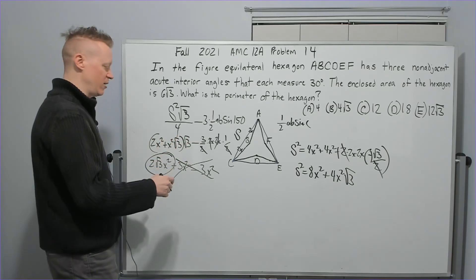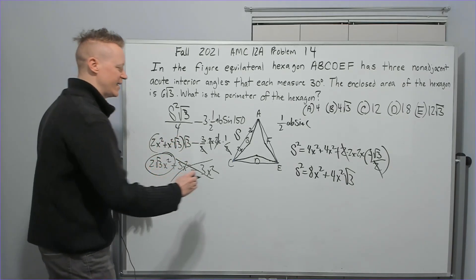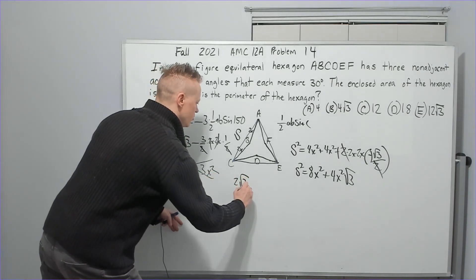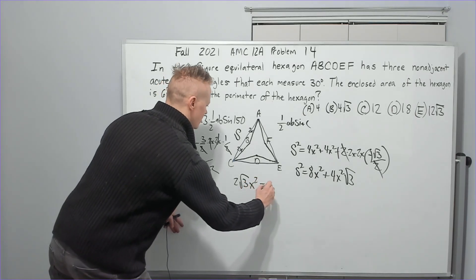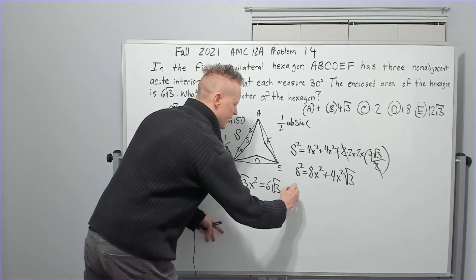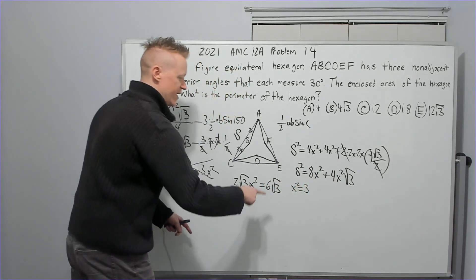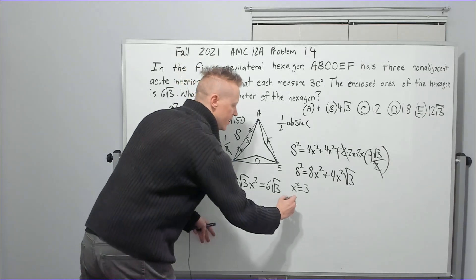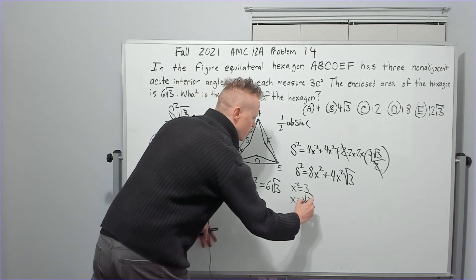So 2 root 3X squared is going to equal 6 root 3. So I'm going to divide by 2 root 3. I'm going to get X squared equals 3. I'm going to square root to get X equals root 3.